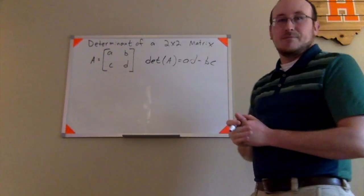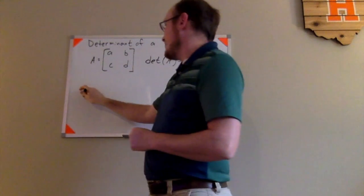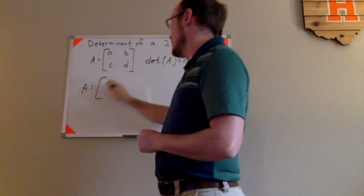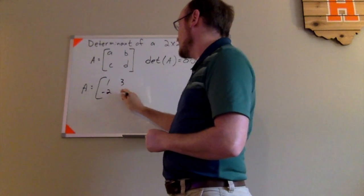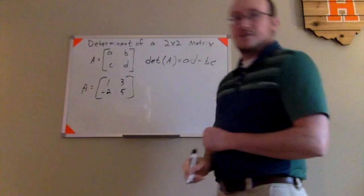So let's look at an example now of how to apply this. Let's say I have matrix A is actually equal to 1, 3, negative 2, 5, for instance.